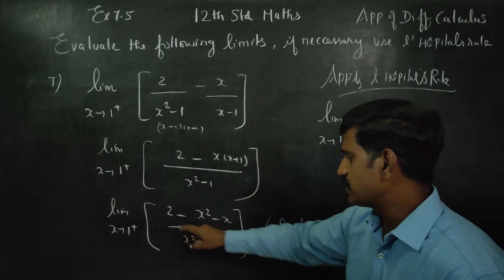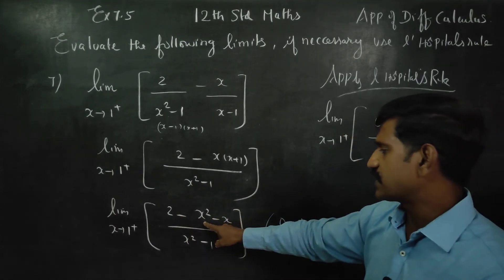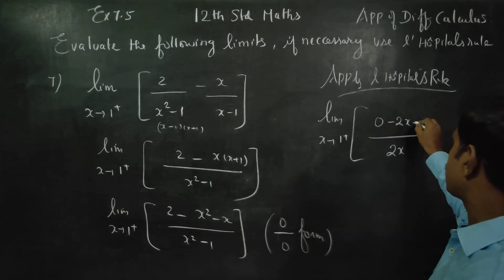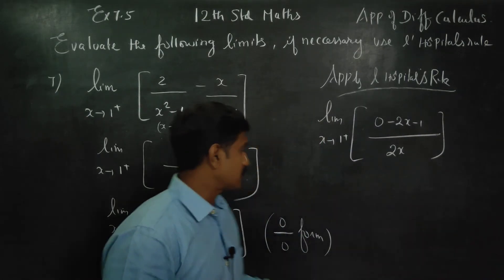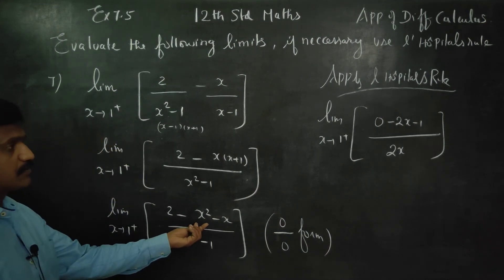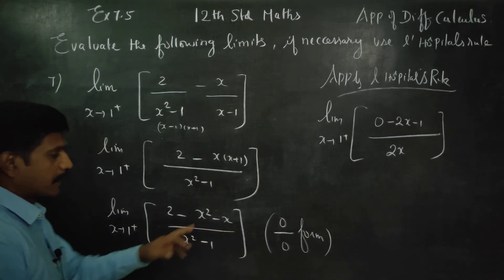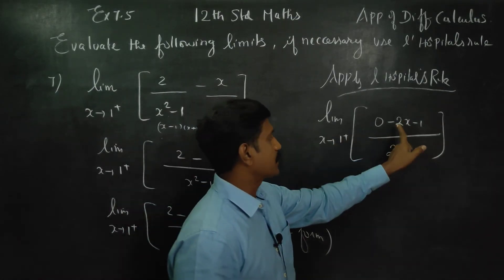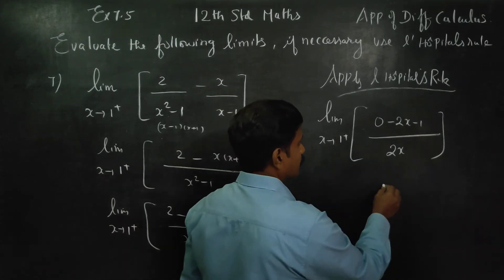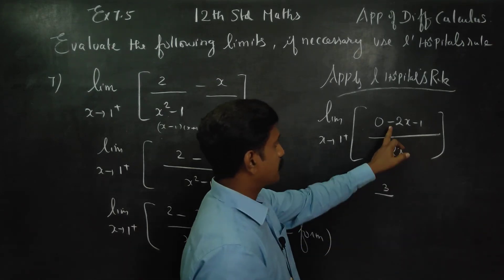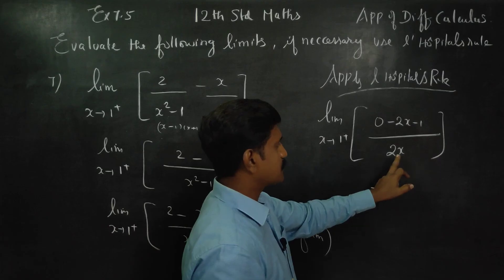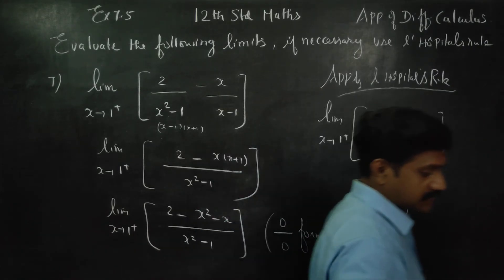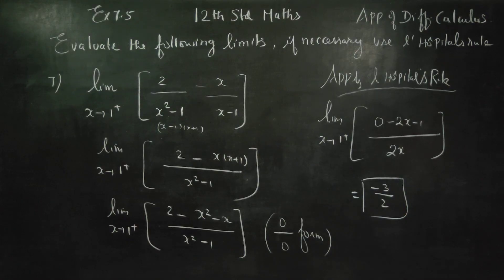Numerator: 0 minus x squared differentiate gives 2x. x differentiate is 1. It is 0, it is 2x. We differentiate — this is 2x, this is minus 1. Substitute x equals 1: 2 into 1 is 2. Your answer will be minus 3 by 2. Thank you.